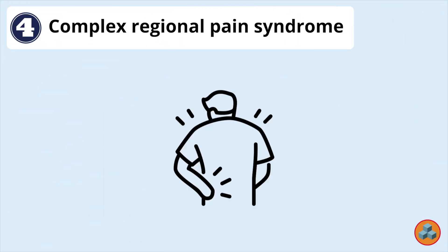Option 4: Complex regional pain syndrome. Complex regional pain syndrome is characterized by an increase in sympathetic activity causing a release of norepinephrine in the periphery and subsequent vasoconstriction of blood vessels, resulting in pain and an increase in sensitivity to peripheral stimulation. Complex regional pain syndrome is not associated with a diagnosis of osteopenia.